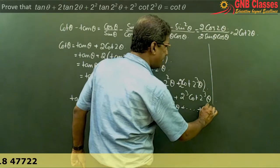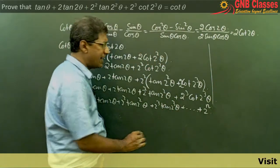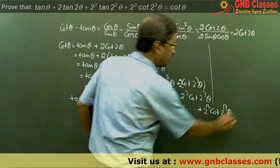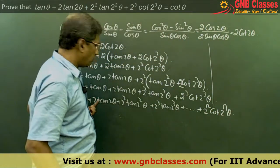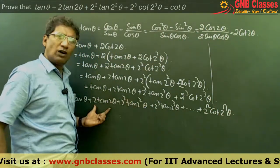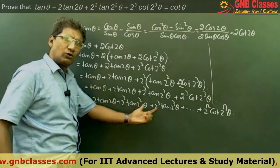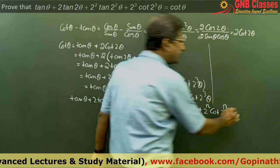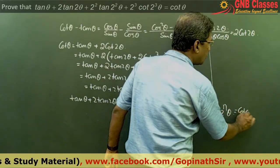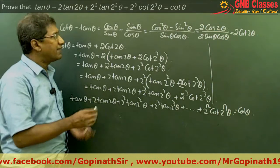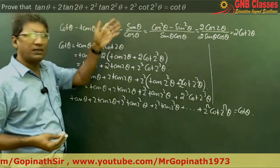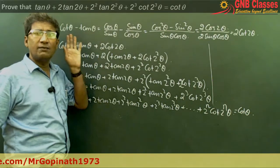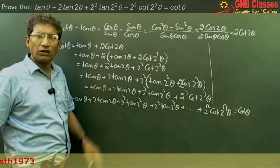If you want to end anywhere, say at 2ⁿ, it will be 2ⁿ cot(2ⁿθ). You can write as many terms as you choose, but you always end with cot θ. The answer will always equal cot θ for this kind of sum. Please remember this result as a formula.